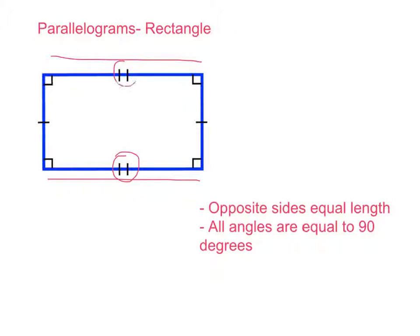We've got the same number of lines — two lines on each of these sides. These sides here are also opposite, and we've got one line on each of these sides. That tells whoever's looking at the rectangle that this side and this side are both opposite and equal, and this side and this side, which are opposite, are also equal. The other characteristic of a rectangle is that all angles are equal to 90 degrees. As you can see, each angle has that little box which represents 90 degrees. So for rectangles: opposite sides are equal in length, and all angles are equal to 90 degrees.